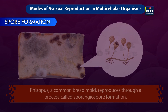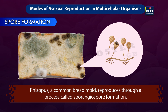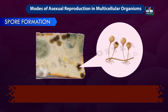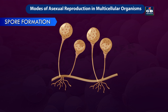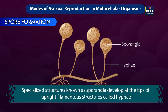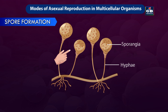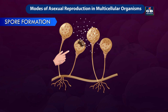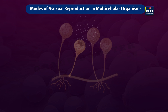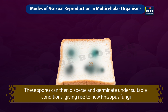Spore formation: Rhizopus, a common bread mould, reproduces through a process called sporangiospore formation. Specialized structures known as sporangia develop at the tips of upright filamentous structures called hyphae. Inside these sporangia, numerous asexual spores called sporangiospores are produced. As the sporangia mature, they eventually rupture, releasing spores into the surrounding environment. These spores disperse and germinate under suitable conditions, giving rise to new Rhizopus fungi. This is all about asexual reproduction in organisms.